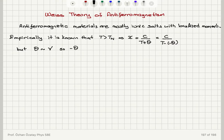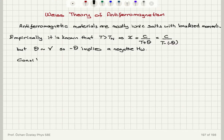From the Weiss theory, we know that theta is proportional to gamma, the molecular field constant. So if we have minus theta, this implies we have a negative Weiss molecular field h_w.